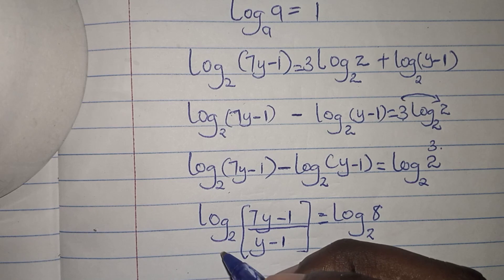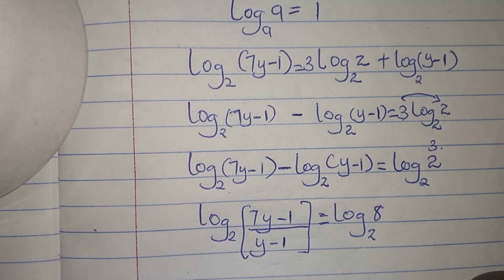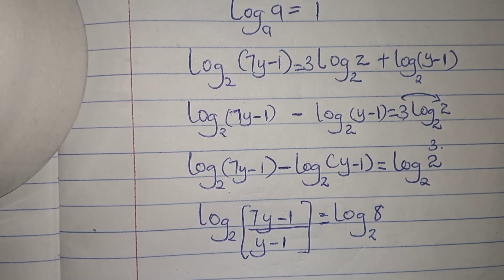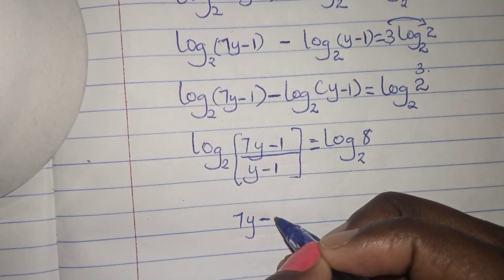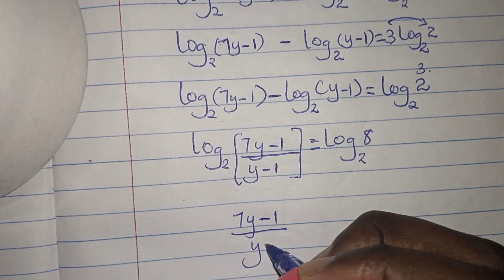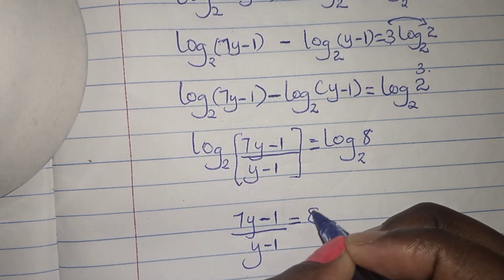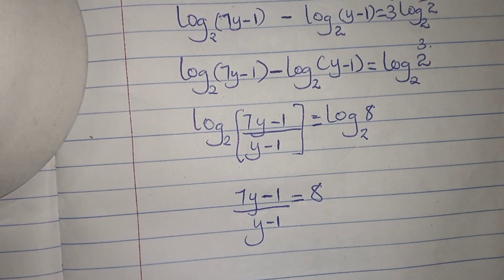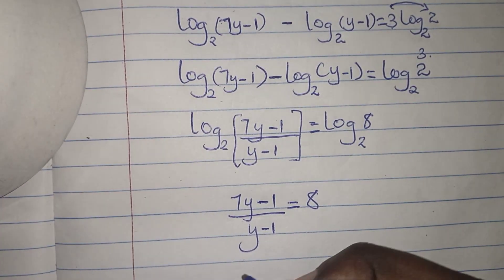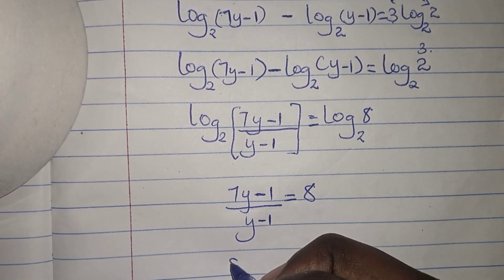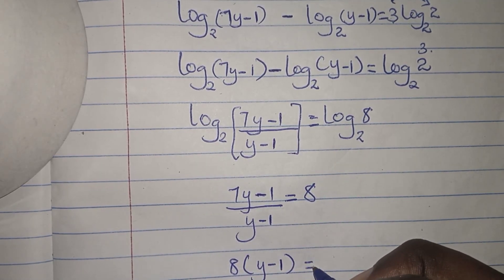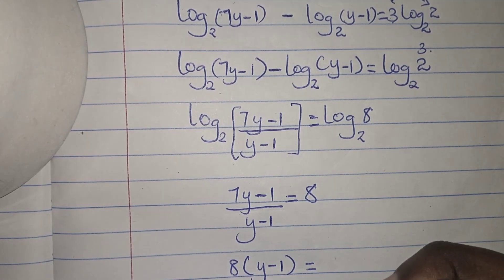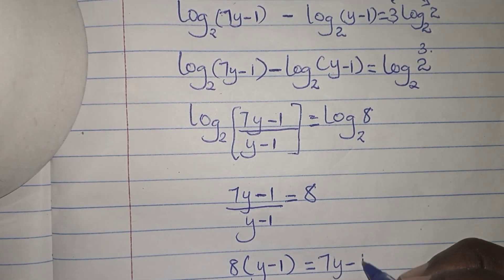My logs have the same base so I can drop them. Do not cancel them, kindly drop them. Next step: (7y - 1) divided by (y - 1) equals 8. Cross multiplying: 8(y - 1) equals 7y - 1.